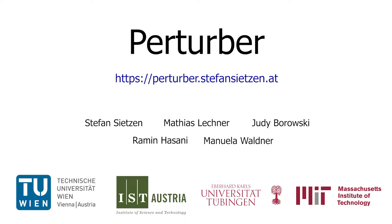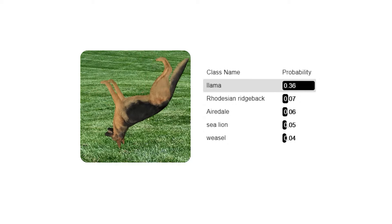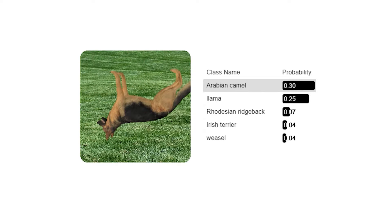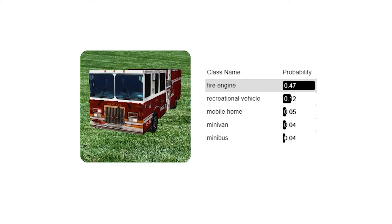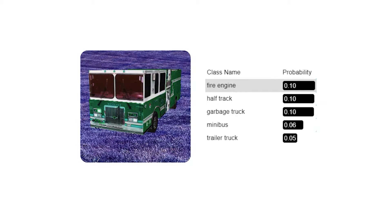While convolutional neural networks are widely used for image-related tasks, questions remain about what they actually rely on for their predictions. Good performance on the training dataset doesn't imply good performance on an independent test dataset, which might be out of distribution, even though for humans it looks semantically equal to the training set.